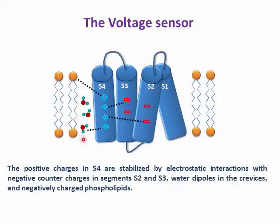Water deposits in the crevice and negatively charged phospholipids also contribute. Except for the most recently described resting state structure of voltage-gated proton channel HV1, all crystal structures of different voltage-gated potassium and sodium channels have captured the voltage sensor domain in its activated conformation. The voltage sensor resting state has been the focus of intense experimental and modeling work, most of which was performed in the shaker potassium channel.